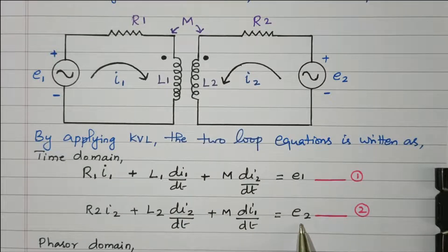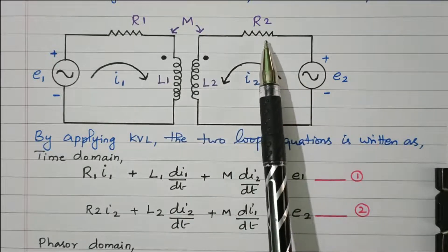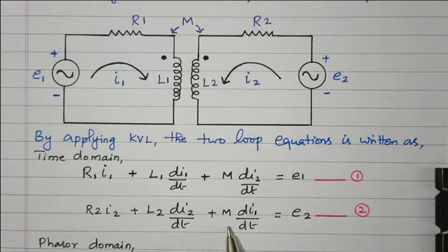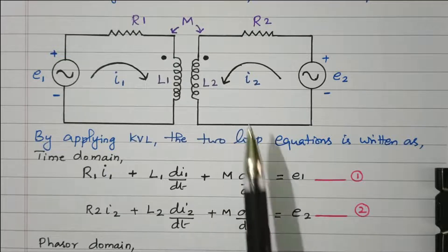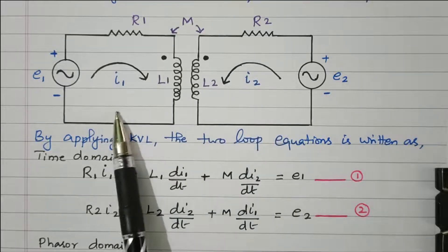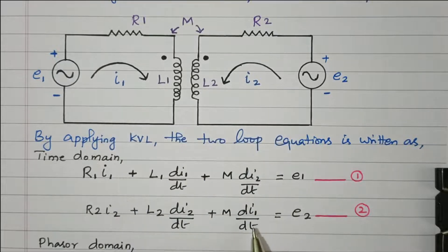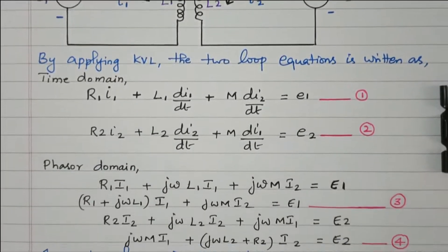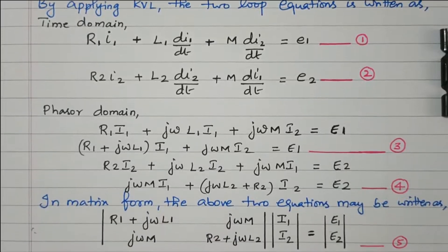Similarly, for the second circuit: e2 = R2·I2 + L2·(dI2/dt) + M·(dI1/dt). This mutual inductance term, while considering the second circuit, is due to the first circuit, so we use dI1/dt. This is equation 1 and equation 2 in time domain, and we can proceed with further simplification.